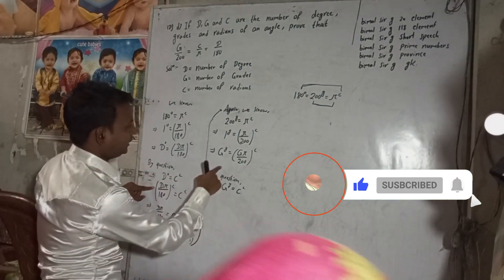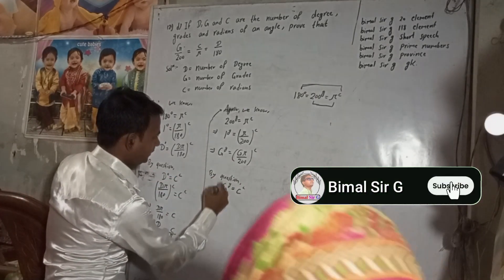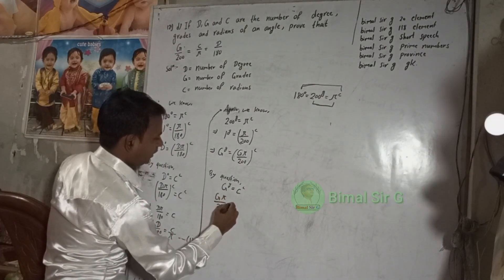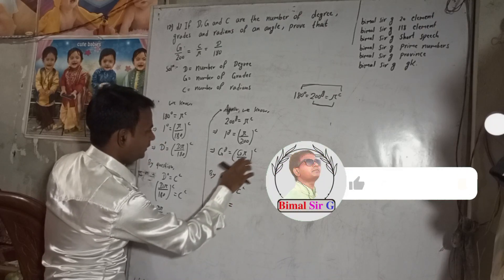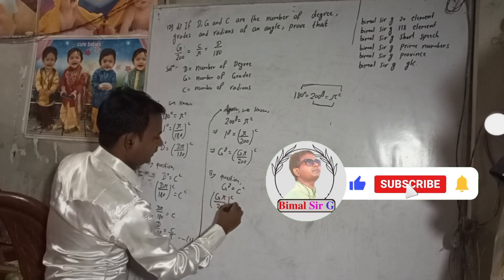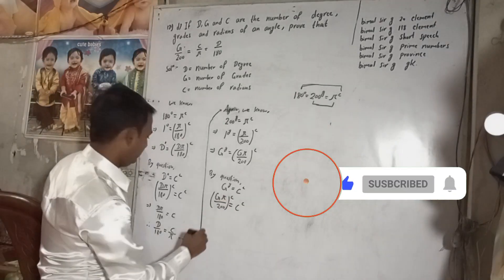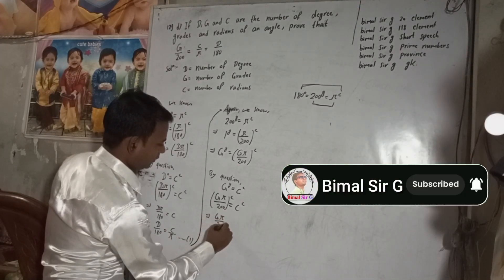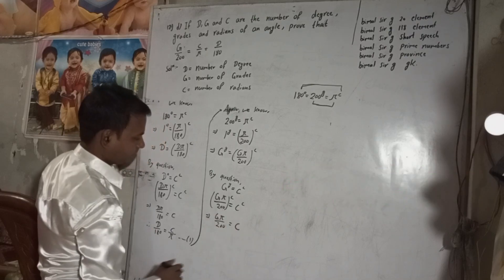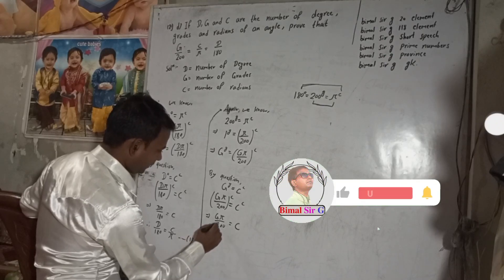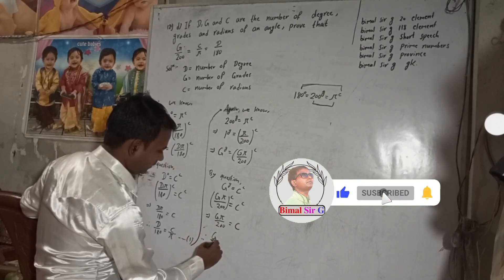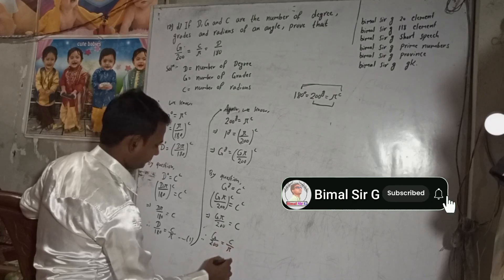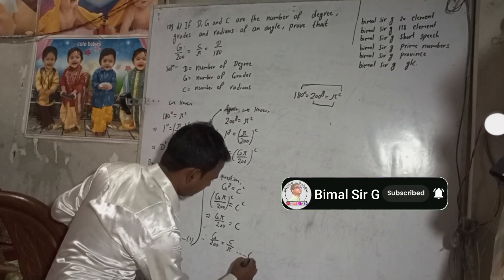So G grades equals G times Pi by 200 radians, and G grades equals C radians. Both sides are in radians, so G times Pi by 200 equals C, which gives us G by 200 is equal to C by Pi. This is equation two.